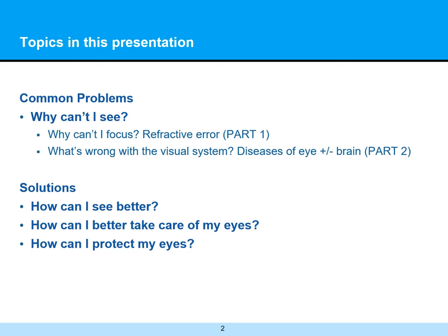Part one went over the four different types of refractive error and the importance of sunlight as the antidote for all the screen time. In this portion, we'll be talking about what's wrong with the visual system, different diseases of the eye, and how we can be preventive — what we can do about those things now, and also what to do if you do have them. So trying to provide some solutions on how you can see better and better care for and protect your eyes.